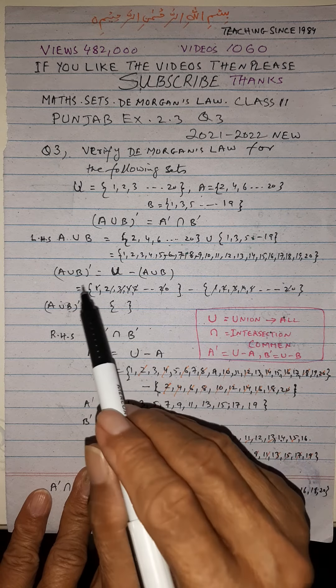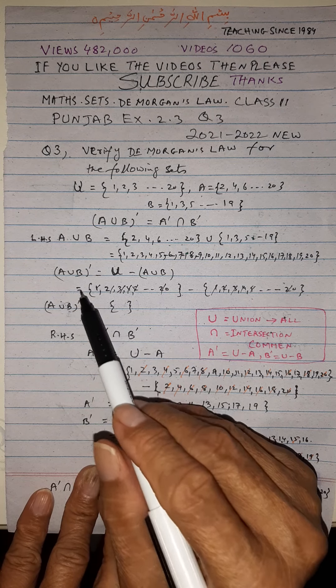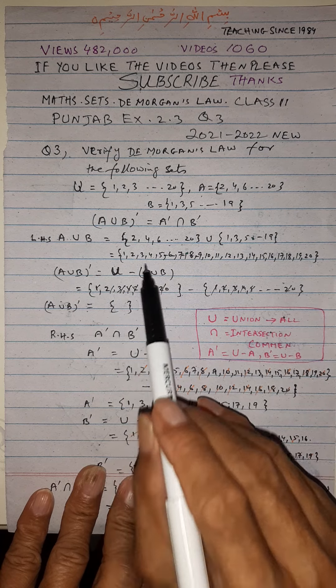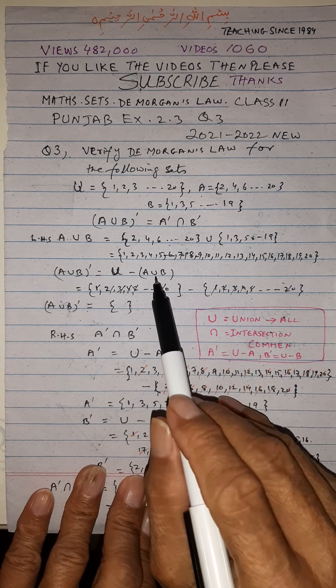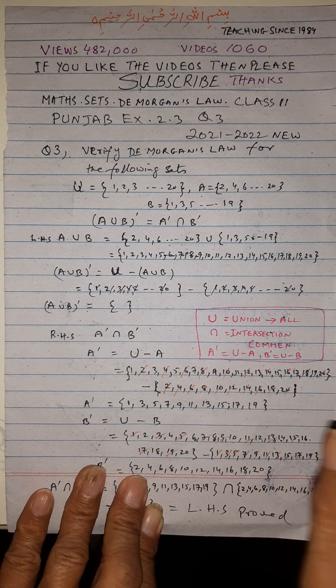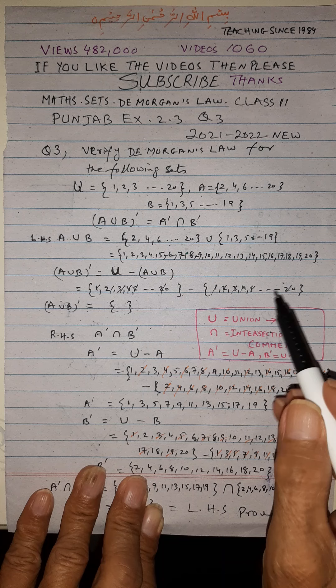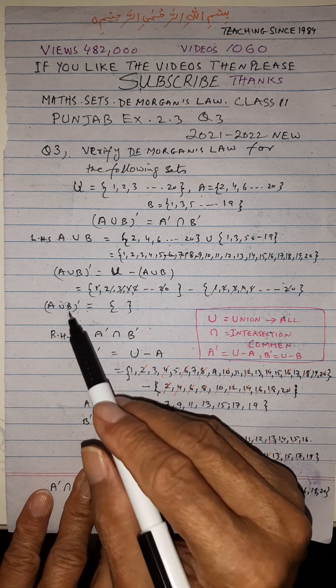Now we have to find A union B prime. Union prime means we minus A union B from the universal set. Universal set is 1, 2, 3, till 20, and A union B is also 1, 2, 3, till 20. Therefore, when we cancel all these, we remain with the null set. A union B prime is the null set.